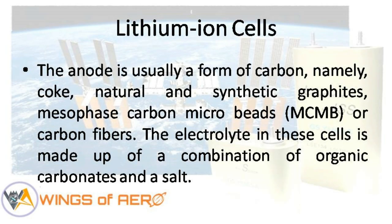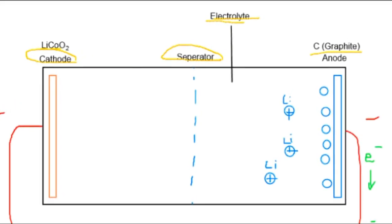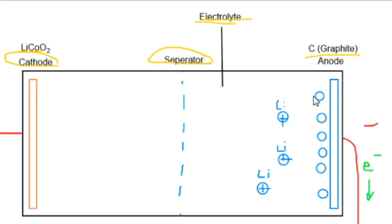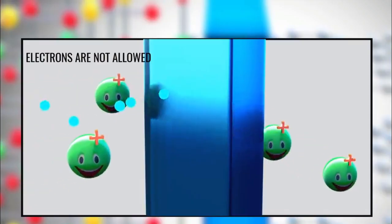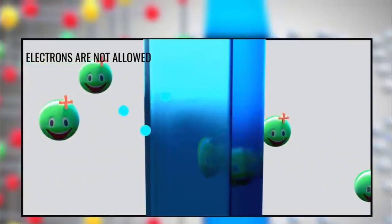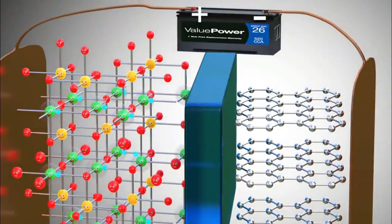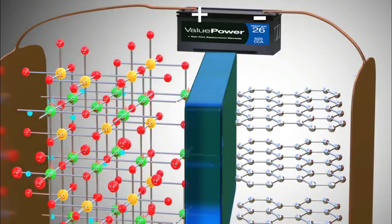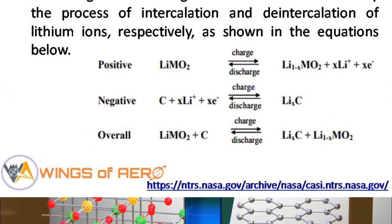The anode is usually a form of carbon, namely coke, natural and synthetic graphites, mesophase carbon microbeads (MCMB), or carbon fibers. The electrolyte in this cell is made up of a combination of organic carbonates and/or salts. The charge and discharge in lithium-ion cells occur by the process of intercalation and de-intercalation of lithium ions respectively.